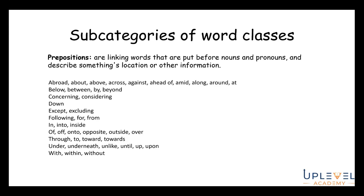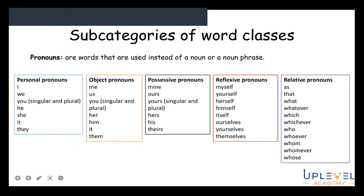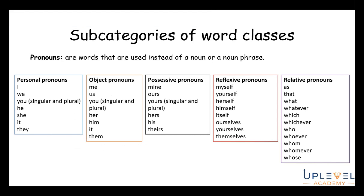Pronouns are words used instead of a noun or noun phrase. We have personal pronouns, object pronouns, possessive pronouns, reflexive pronouns, and relative pronouns. It's really important to understand them because some have singular and plural forms, and you need to use them correctly — for example knowing when to use which, whom, whomever, and whose.